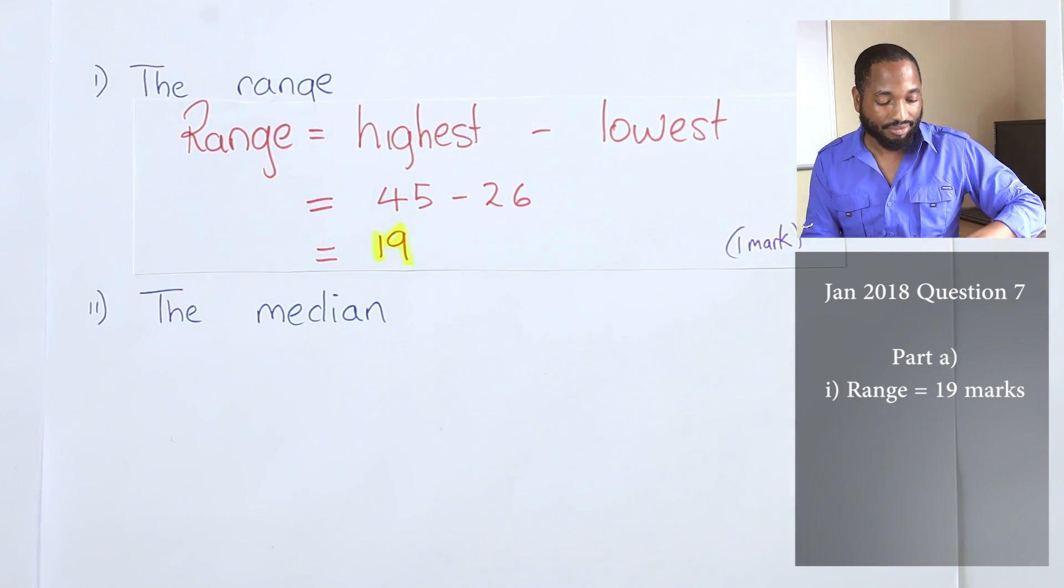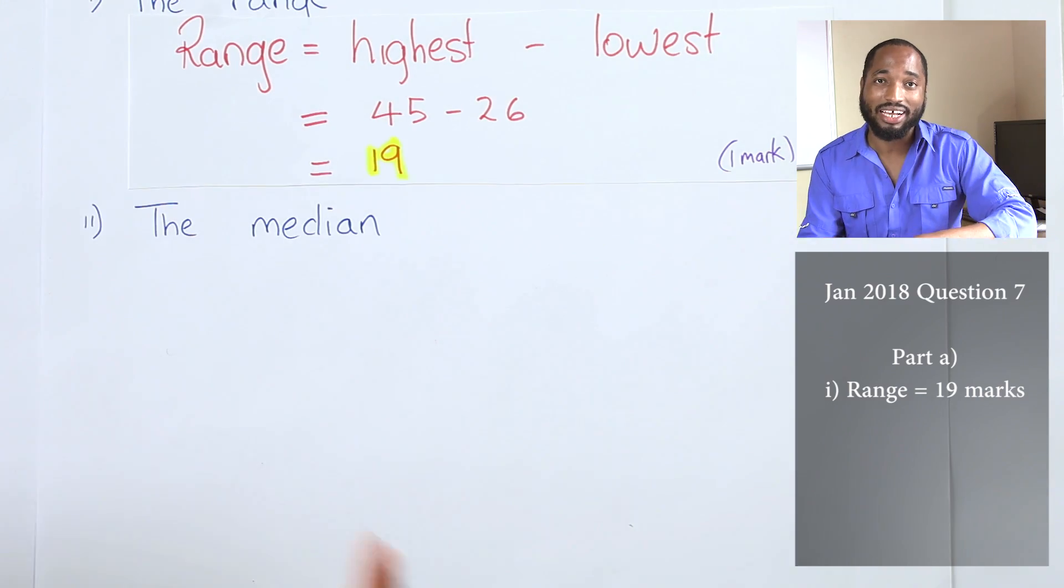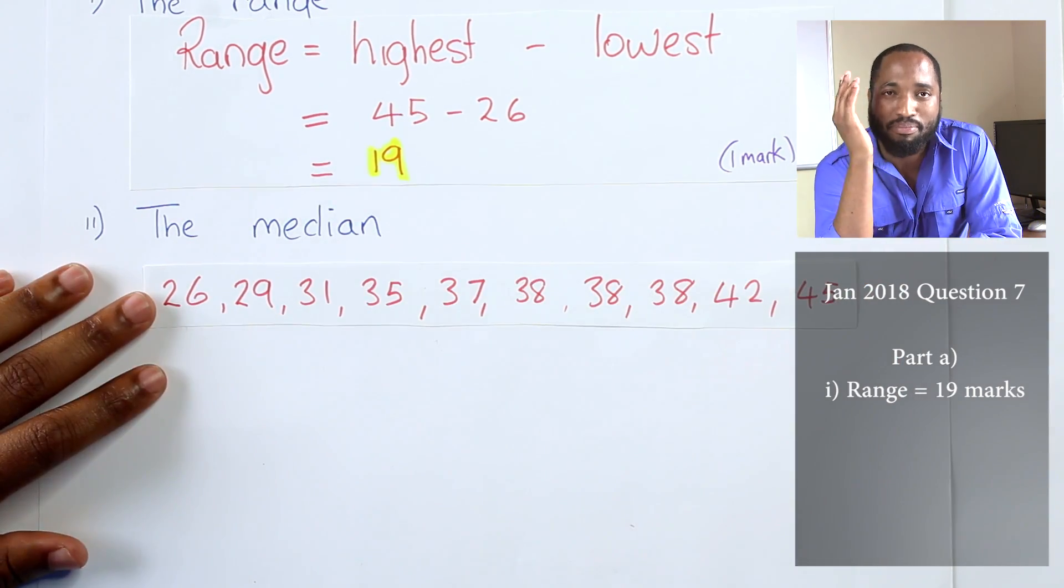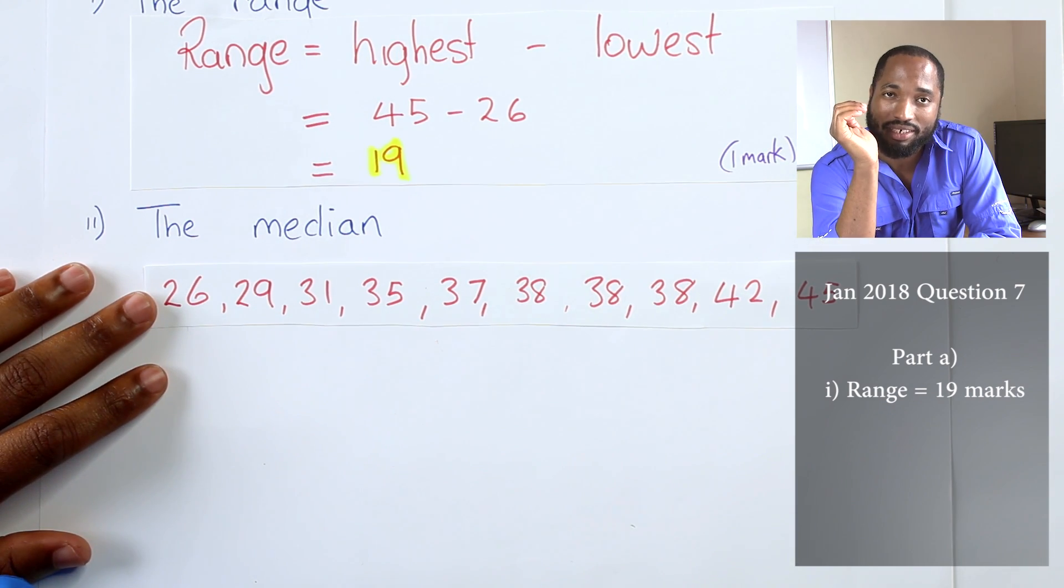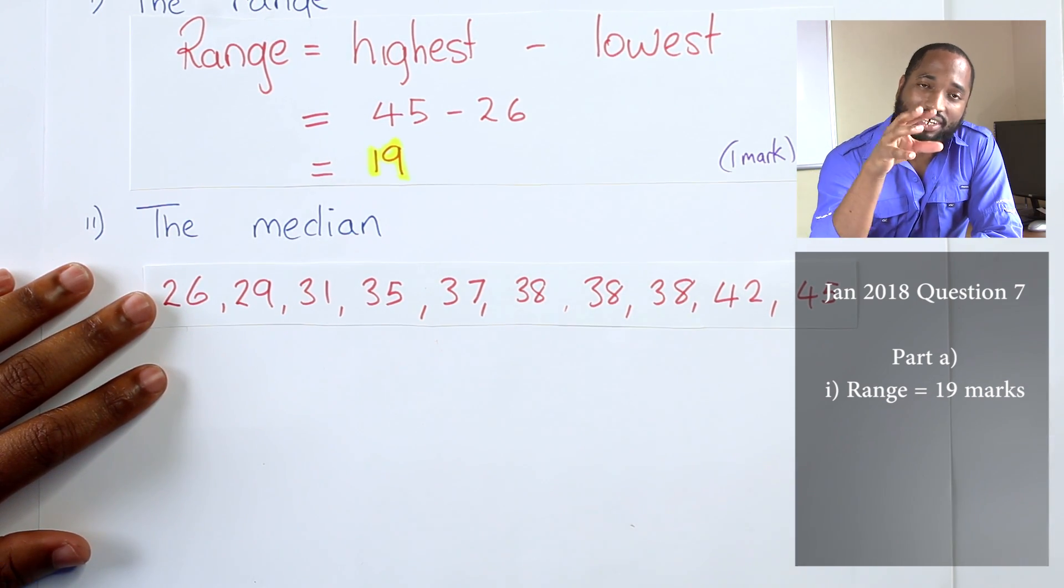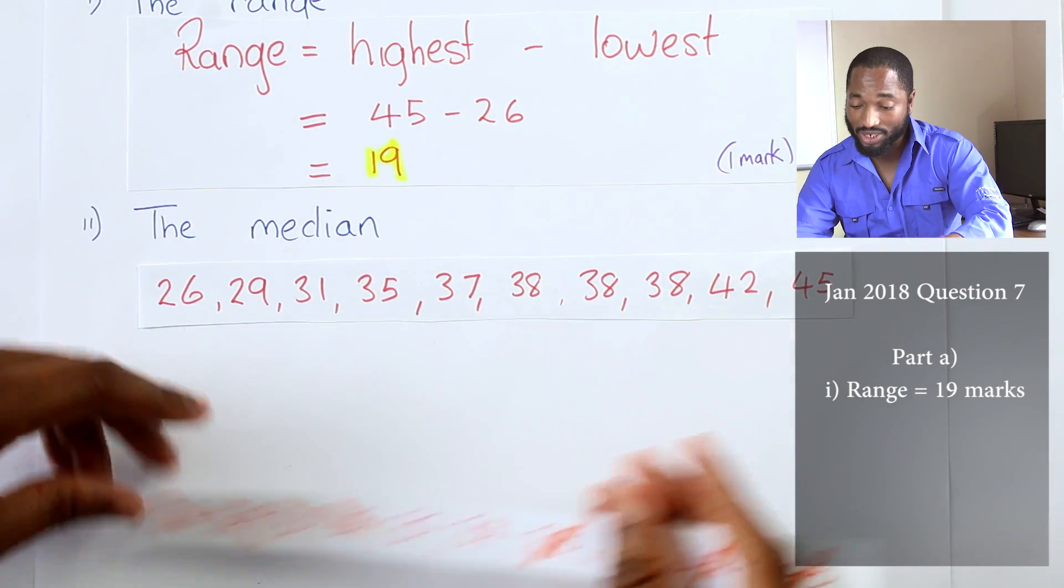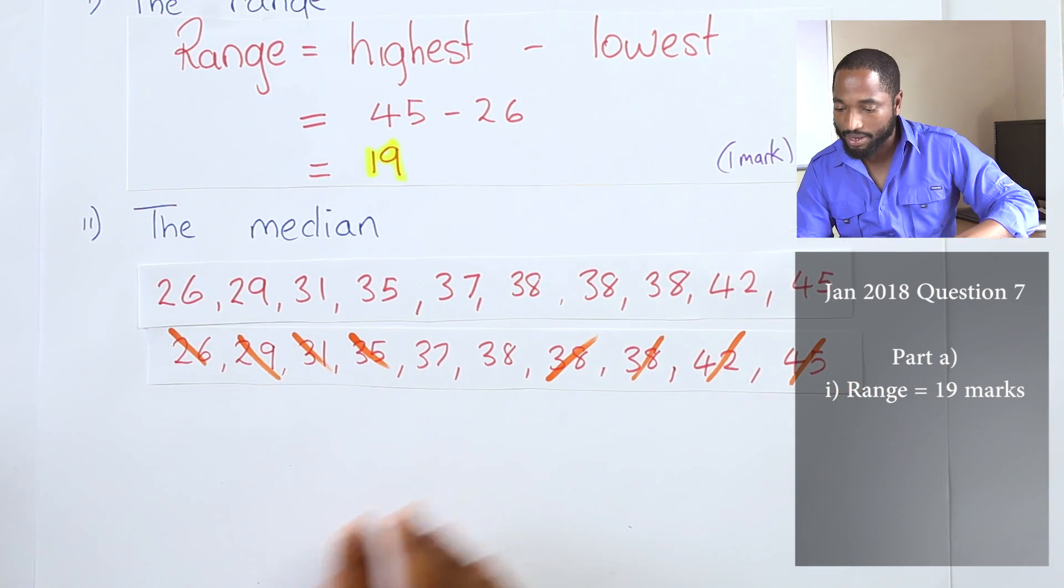Median comes back to primary school where we are asked to find the middle. Plenty people mix up median and mean. Median is middle, mean is average. The first thing you do is arrange it in numerical order, then you cross out just like what they teach you in primary school. Cross out pairs, pairs, pairs.